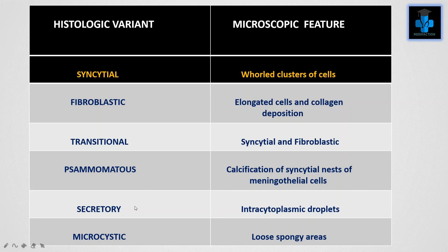Next is the secretory variant, in which intracytoplasmic droplets can be seen. Next is the microcystic variant, in which loose spongy areas can be observed.